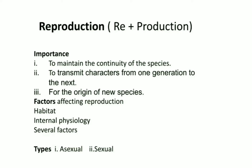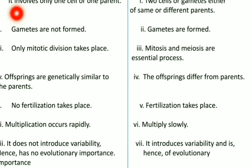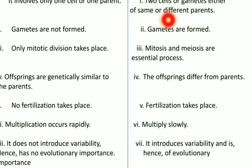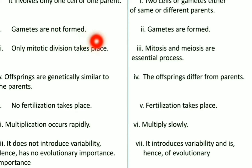Now let's see the difference between asexual and sexual reproduction. Asexual reproduction involves only one cell or one parent, whereas sexual reproduction involves two cells or gametes, either of the same or different parents. Gametes are not formed in asexual reproduction, whereas in sexual reproduction, gametes are formed.